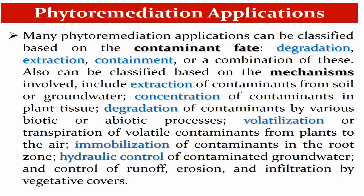Phytoremediation can also be classified according to the mechanism of the plant — how the plant is able to degrade or biodegrade pollutants. Mechanisms may involve extraction of contaminants from soil or groundwater, concentration within plant tissue, degradation by biotic or abiotic processes, volatilization or transpiration of volatile contaminants from plants to the atmosphere, immobilization in the root zone, hydraulic control of contaminated groundwater, and control of runoff, erosion, and infiltration by vegetative covers.